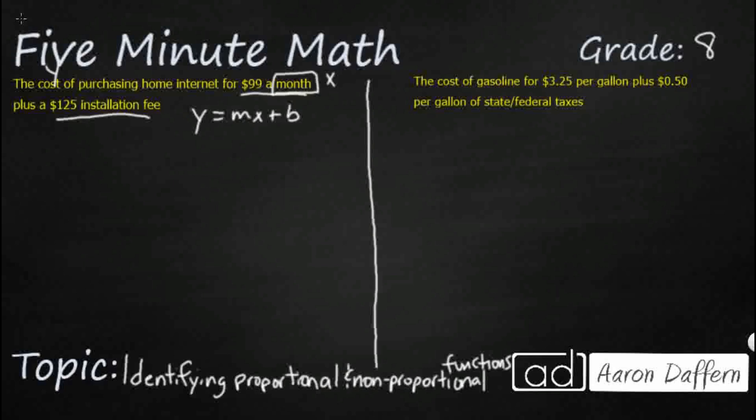The cost is what we're always searching for. That's our dependent variable. So let's say our cost y is going to equal how much a month. We would say $99x plus, and then we've got this right here.